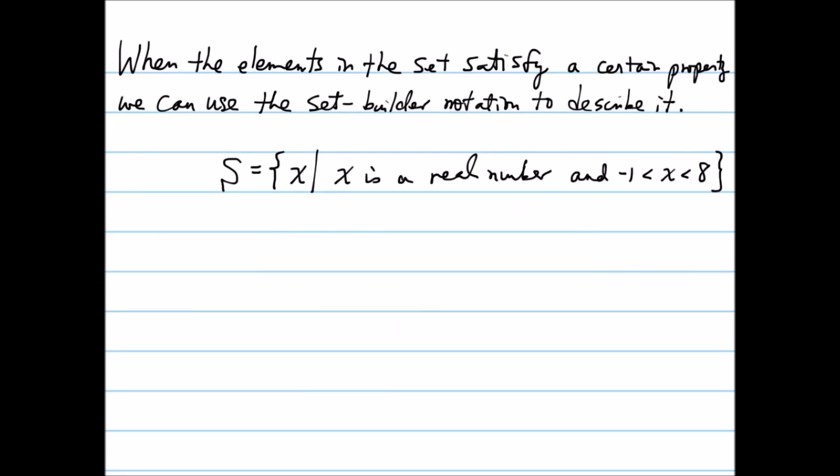In this notation, the X here is an element in the set S. This vertical bar here is called the such that. Basically saying that whatever follows the vertical line is the conditions that everything in the set S satisfies. So in this case, everything in the set S must be a real number and must be between negative 1 and 8.